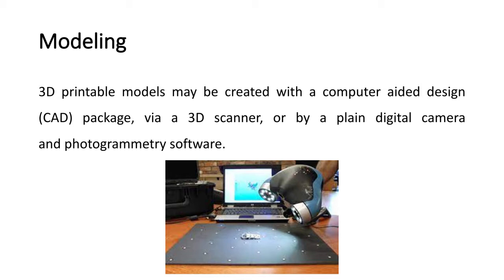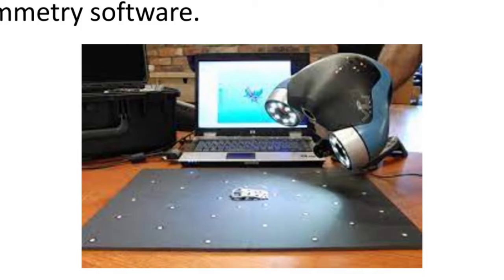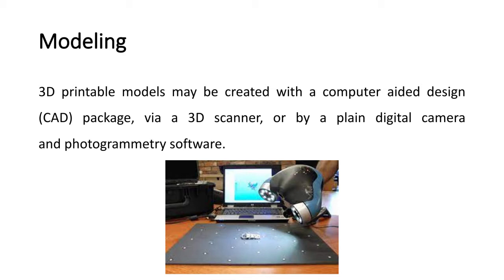A 3D printable model may be created with the help of computer-aided design CAD packages, via a 3D scanner, or by plain digital camera and photogrammetry software. Here you can see a 3D scanner used to create a 3D model — it scans the object and directly gives you a 3D model on your screen. We can also use various CAD softwares like CATIA to create a 3D model of the object.